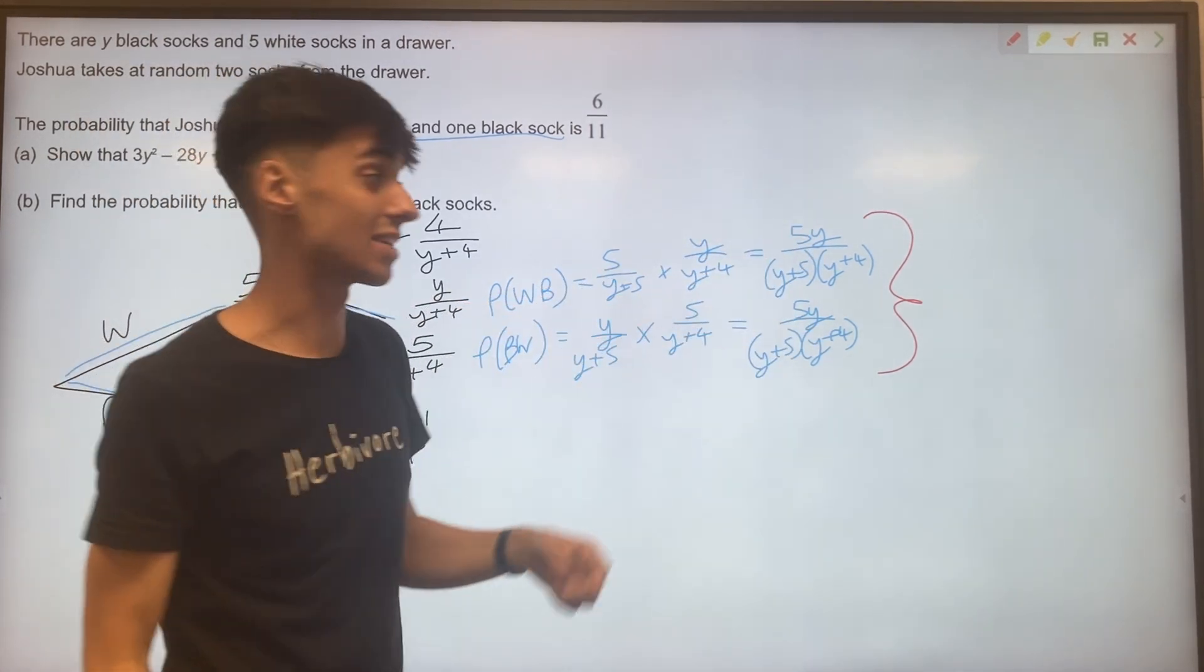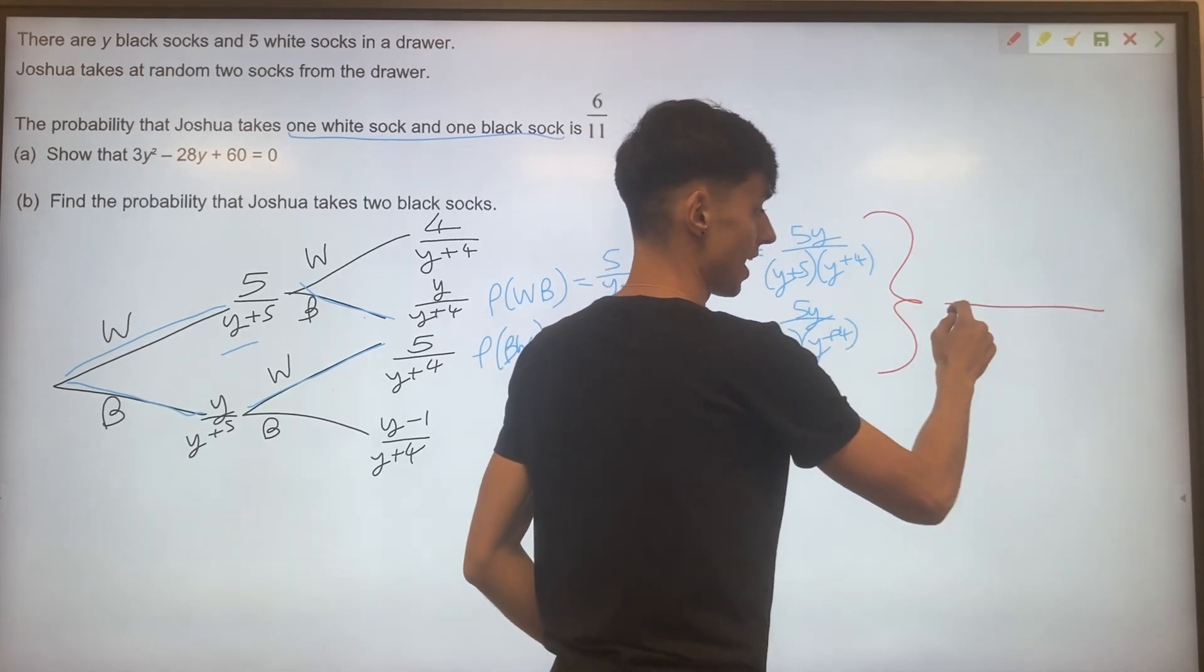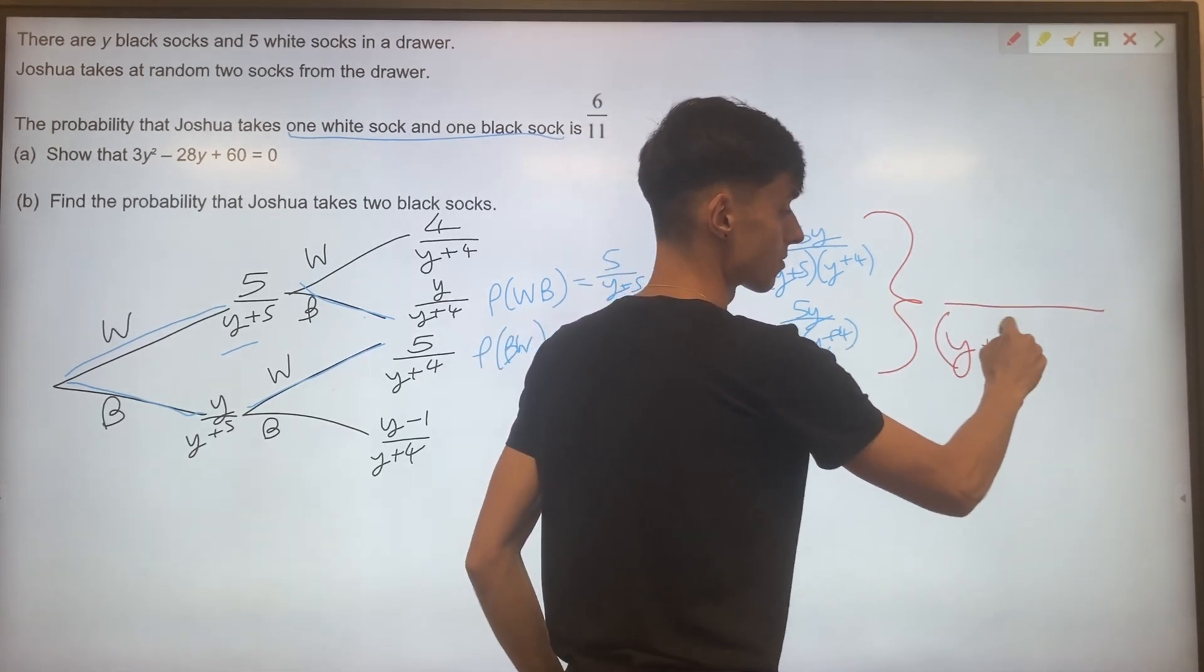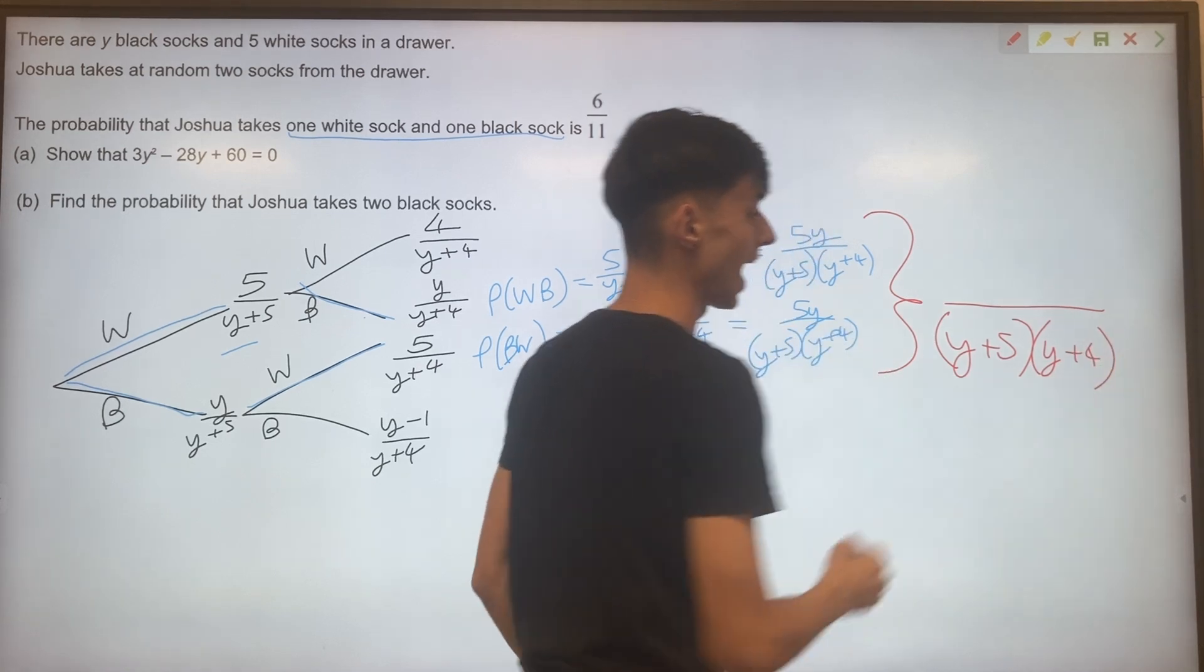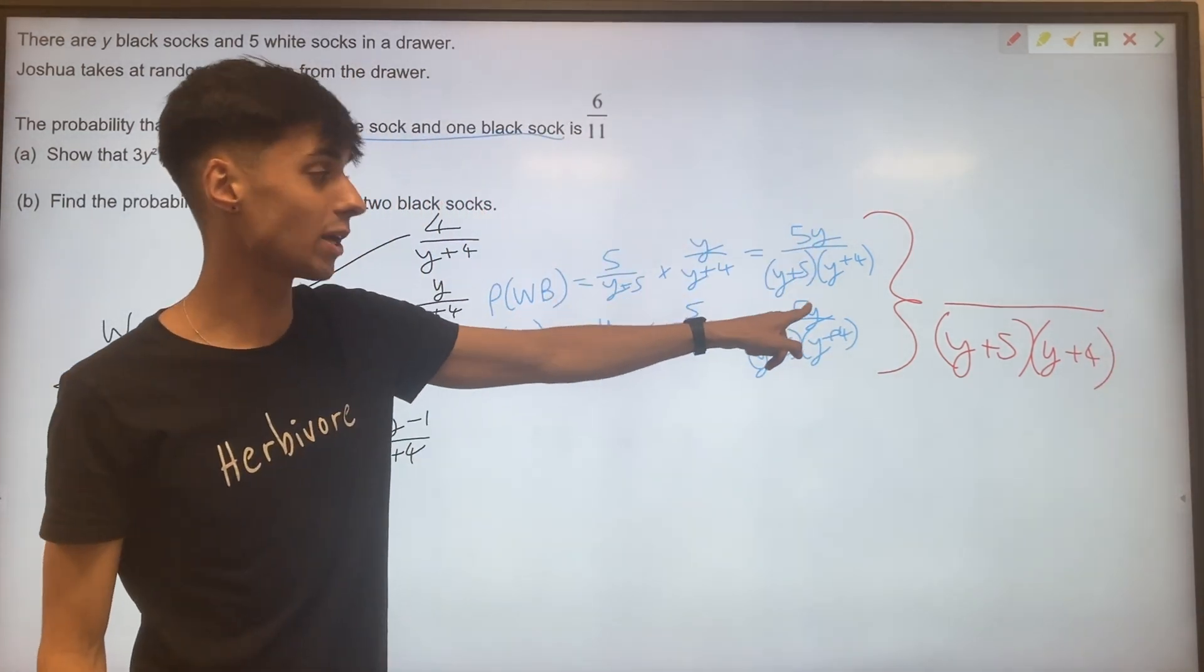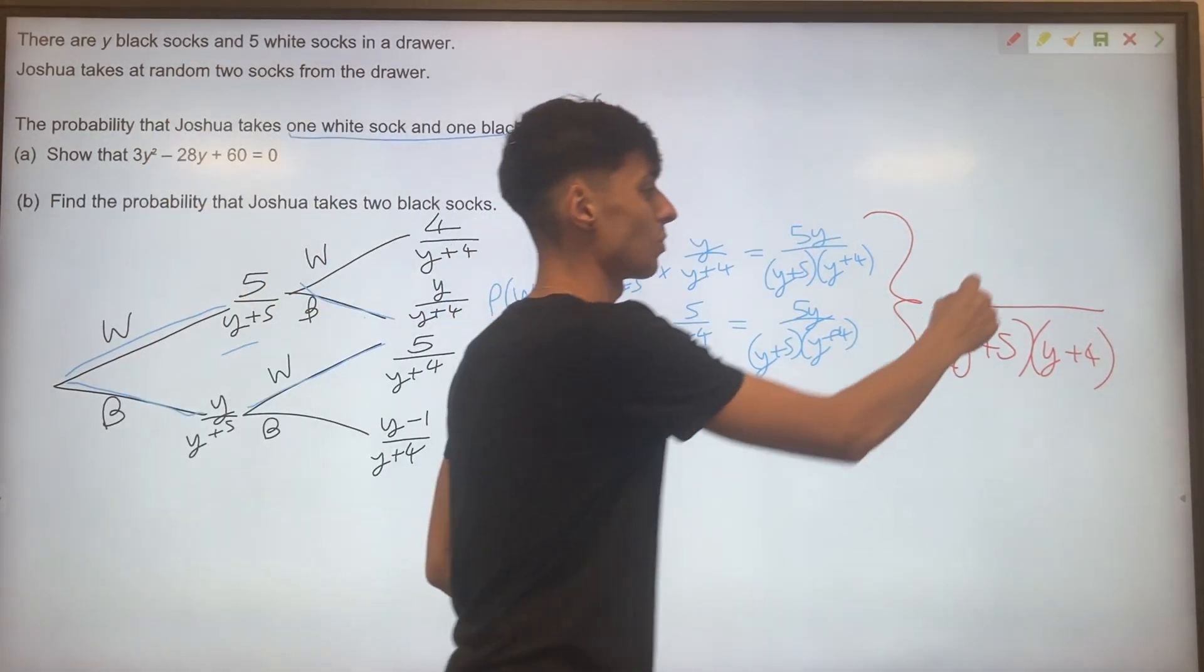the denominator obviously stays the same. So that is just brackets y plus five, y plus four. And on the top, you've got 5y plus 5y to get 10y.